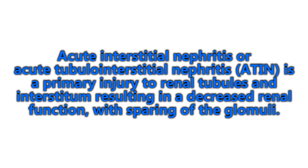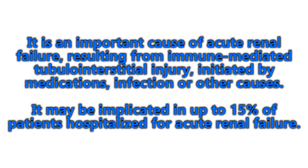Acute interstitial nephritis, or acute tubulo interstitial nephritis — ATIN — is a primary injury to the renal tubules and interstitium resulting in decreased renal function and sparing of the glomeruli. It's an important cause of acute renal failure resulting from immune-mediated tubulo interstitial injury initiated by medications, infections, and other causes, and may be implicated in up to 15% of patients hospitalized for acute renal failure.